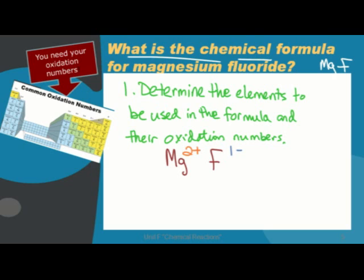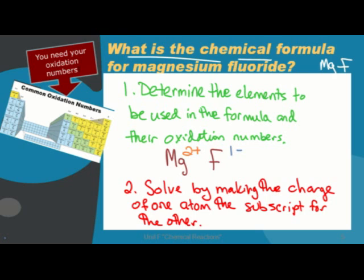This step has us figure out what is the subscripts for magnesium fluoride. We do this by changing the charge of one of the atoms for the subscript for the other. So the 2+ charge for magnesium becomes the subscript for fluorine, and the charge for fluorine becomes the subscript for magnesium. We then end up with the chemical formula of MgF2.